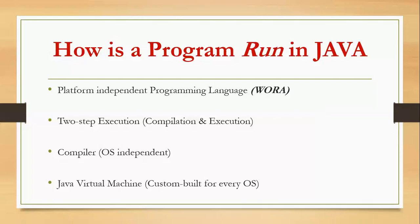Today I'm briefly going to talk about how your program is executed or run in Java. It's going to be a brief tutorial. As was said in the previous video, Java is a portable programming language, meaning that if you develop your application on a Windows machine, you can still run it on a Mac or Linux machine without any trouble. Since it's a platform-independent programming language, it's also what people usually call a write once, run always programming language.